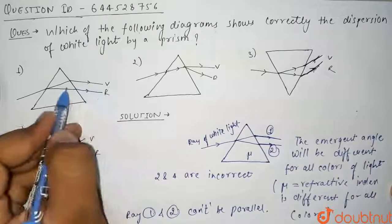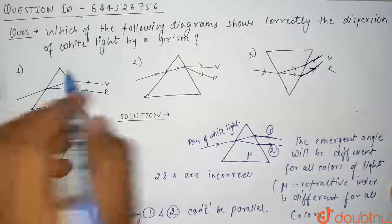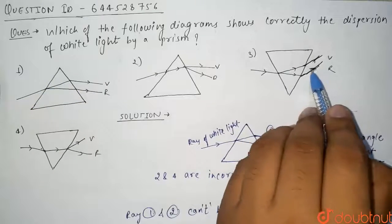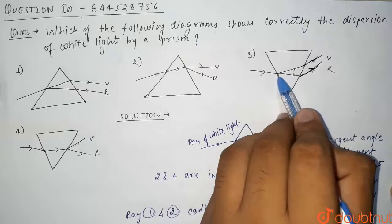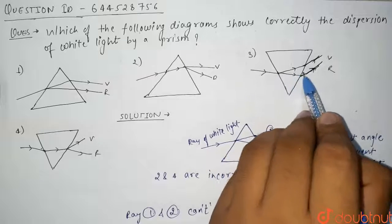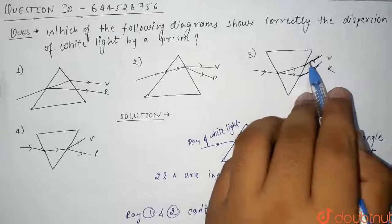So this is not our correct answer. And if we see this diagram, then we can clearly see that the dispersion is taken from this surface, then it goes like this, and after reflecting from this surface, these two rays are not parallel to each other. So this is our correct answer, that's your option 3.